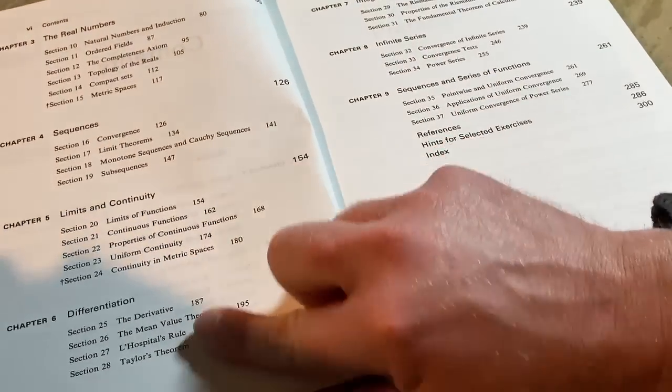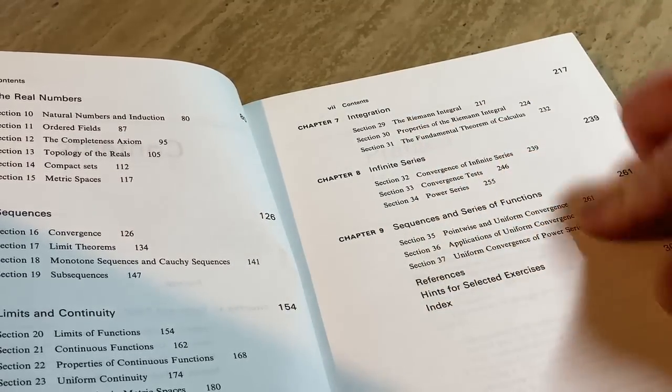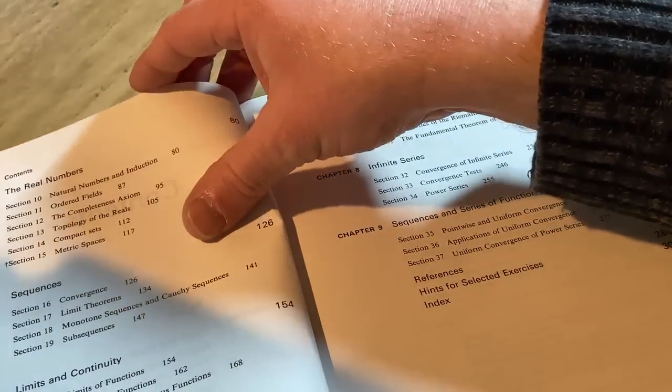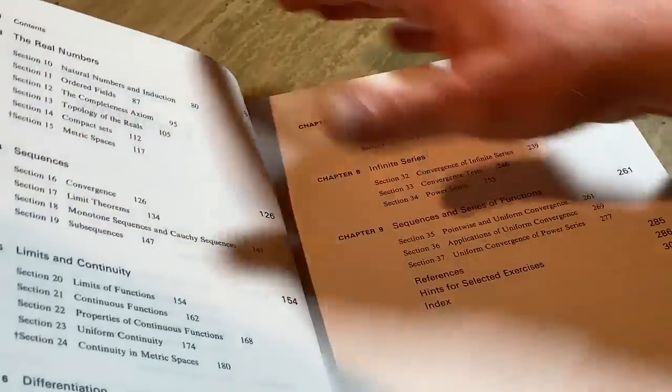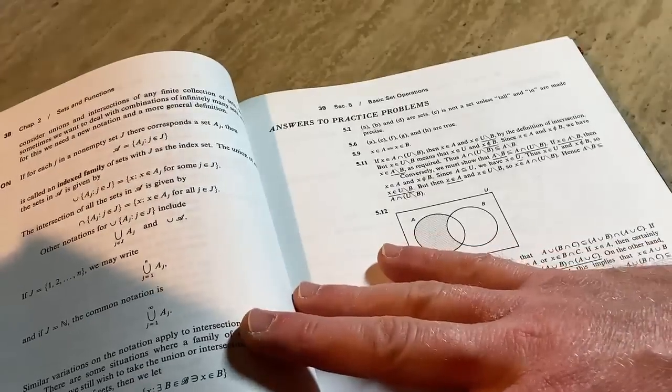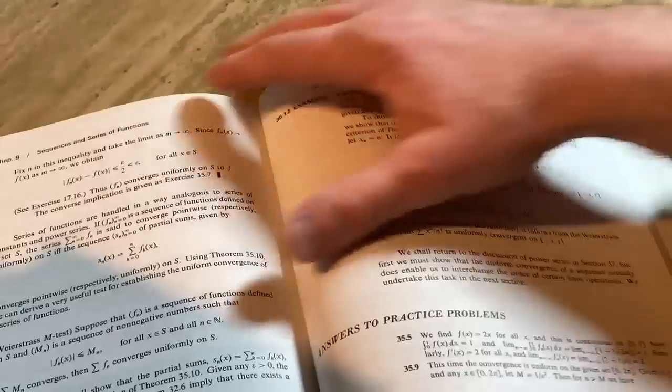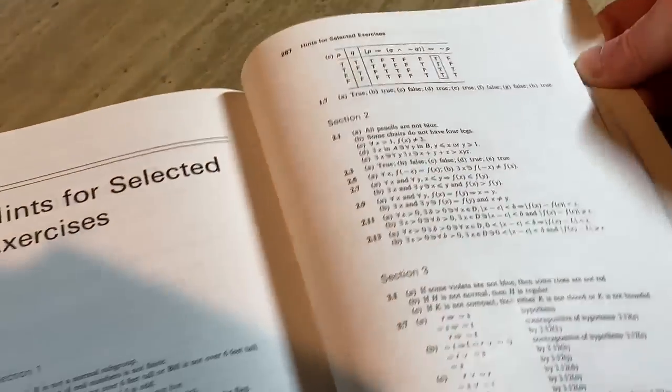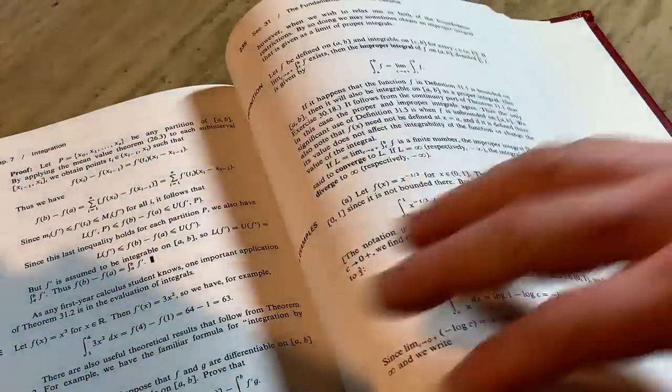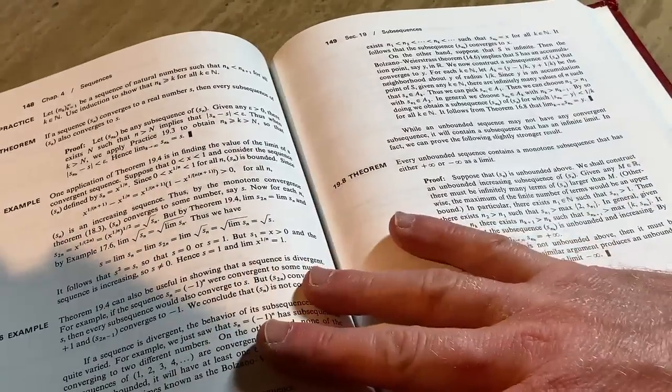So when you get a book like this, what happens is you have a brief introduction and then you have some more sections. You have sets and functions, nice small sections. I like books with small sections, real numbers, sequences, limits and continuity, differentiation, integration, infinite series, sequences and series of functions. Notice there's not a lot of multivariable stuff in here. There's not a lot here. It does talk about metric spaces, so that's good, but it's got answers to practice problems, which is nice as you see here. And it's got some answers in the back of the book as well. Let's go look. That makes it a great book for self-study, hints for selected exercises. So they never give you everything, but it's certainly better than nothing. Whereas the Munkres book has no solutions, which is very rough.